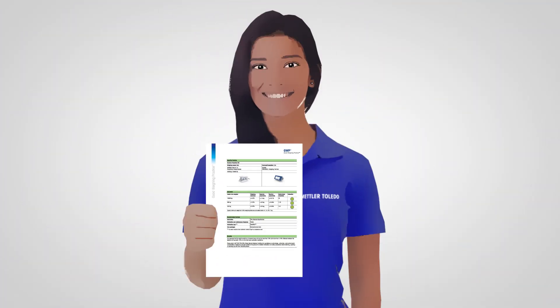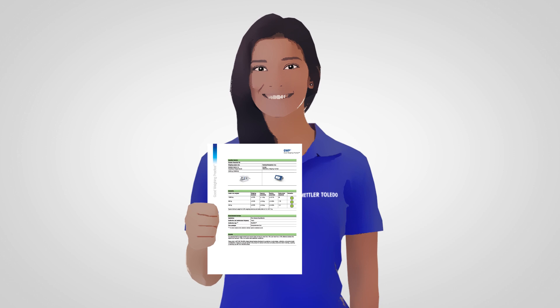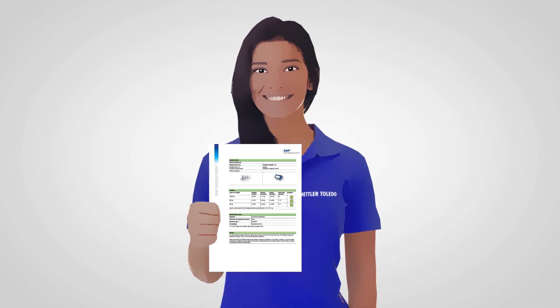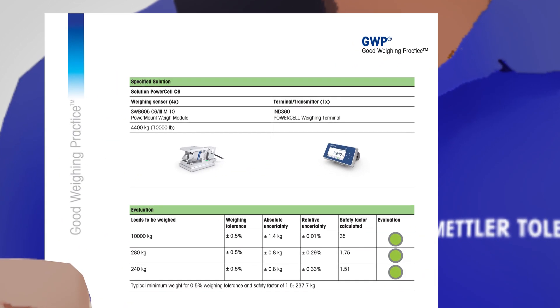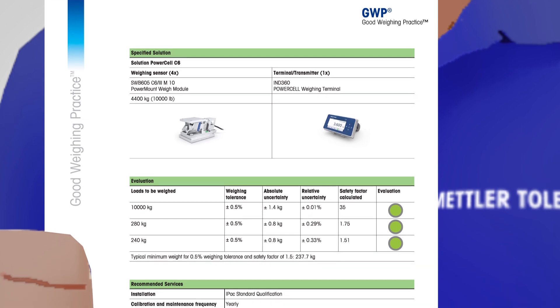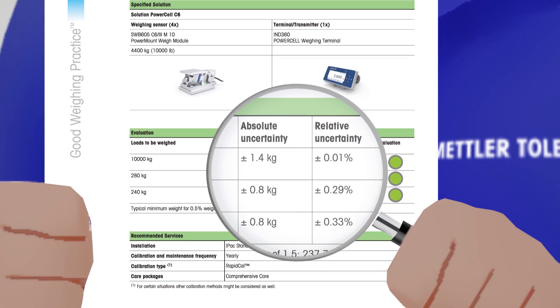With Good Weighing Practice of Mettler Toledo, we provide technical documentation to define the ideal combination of components and calculate the expected measurement uncertainty for each individual application.